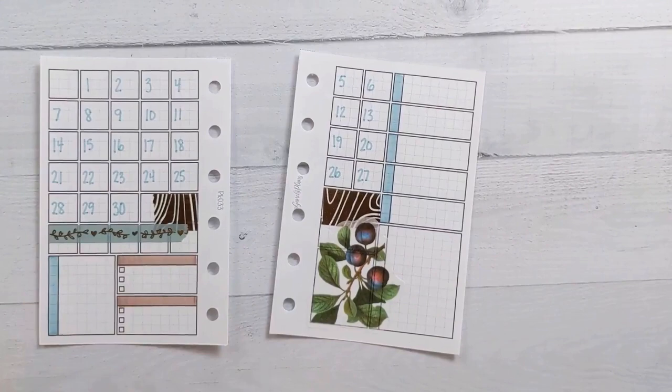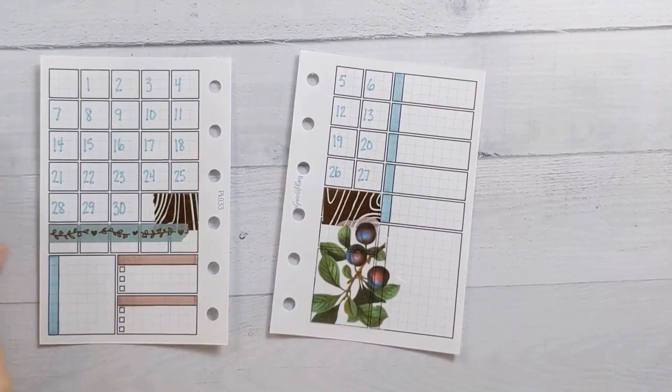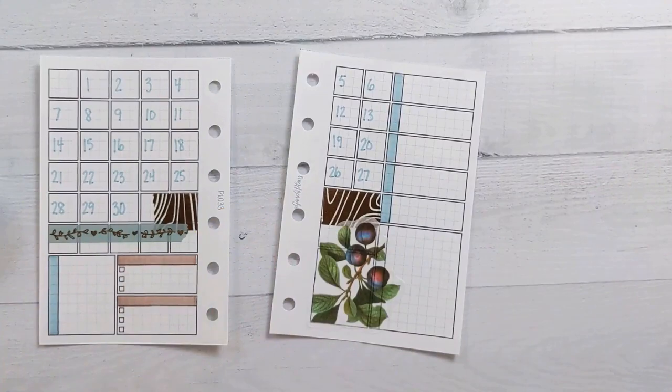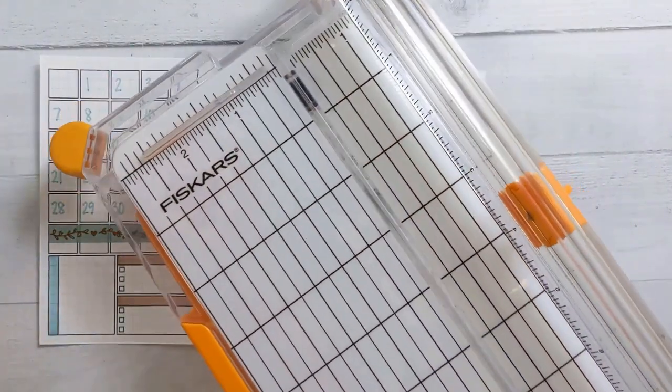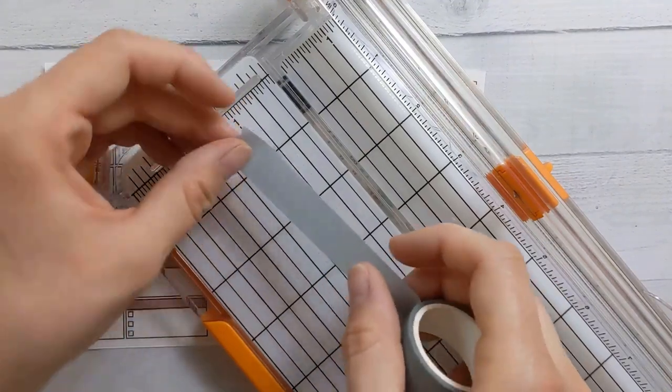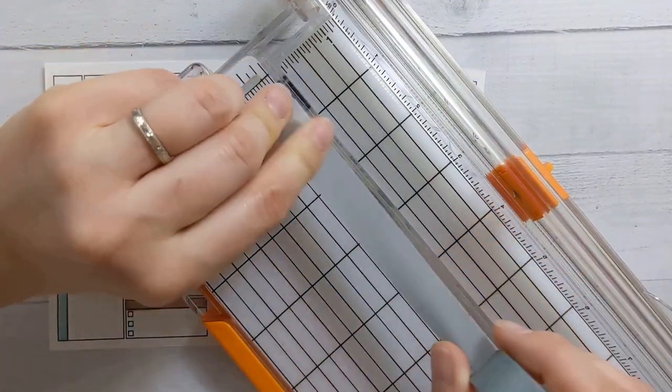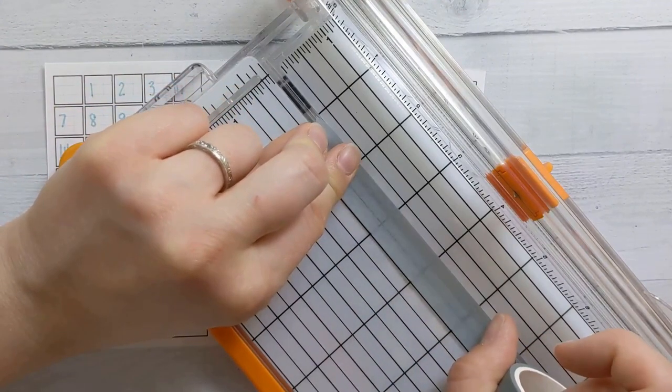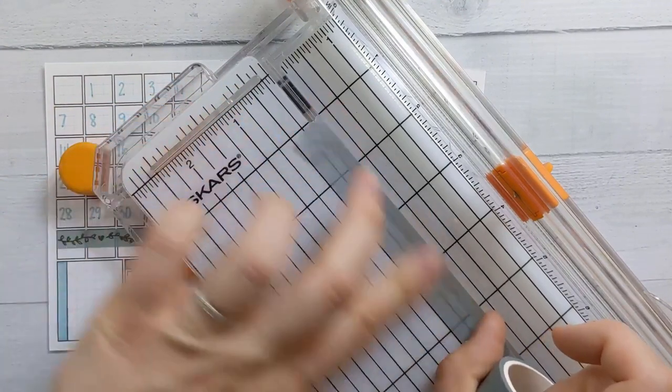I don't really have a thin washi tape that I think would go well with this color scheme, it's either too green or too blue. So I'm gonna go ahead and take some of this and slice it really really thin and see how that turns out, something along the lines of this.